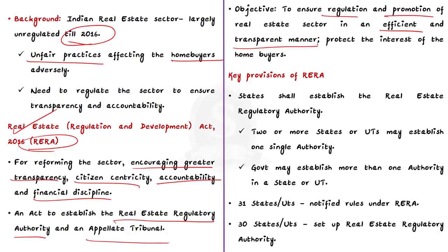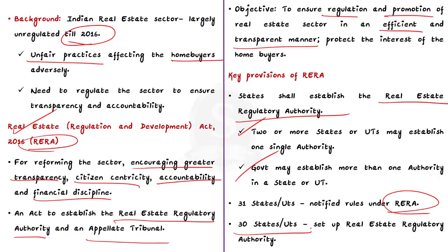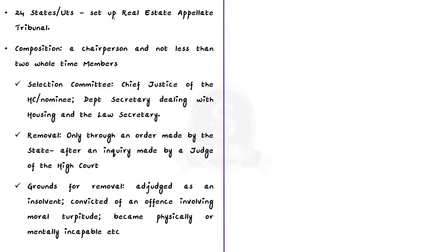Key provisions of RERA: States shall establish the Real Estate Regulatory Authority to exercise the powers conferred on it. In some cases, two or more states or union territories may establish one single authority; in others, a government may establish more than one authority in a state or union territory. As per the latest data, 31 states and union territories have notified rules under RERA, 30 have set up the regulatory authority, and 24 have set up the Real Estate Appellate Tribunal.